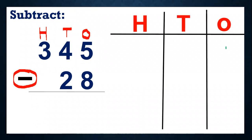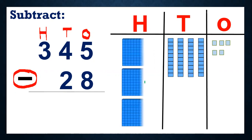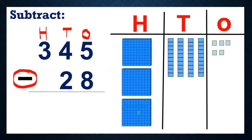Let's draw the blocks — ones, tens, hundreds. So how many ones do we have? Five ones, so five blocks of ones. And four tens, so four blocks of tens. And three hundreds, so three blocks of hundreds.